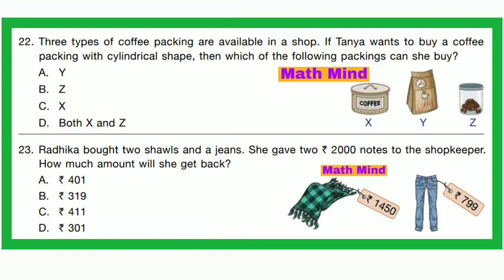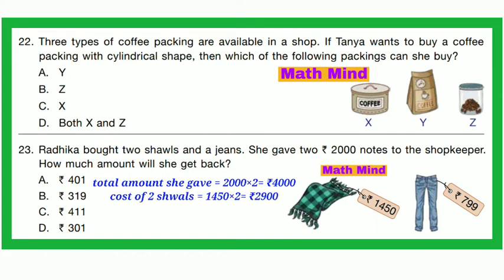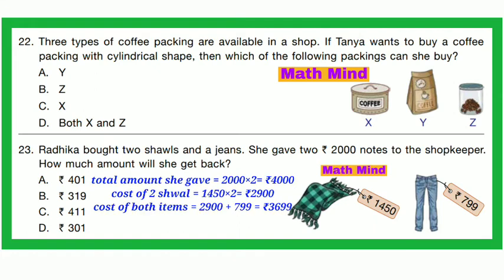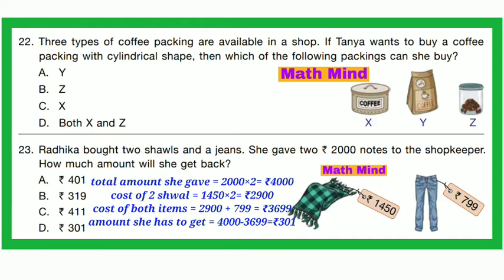Question No. 23: Radhika bought 2 shawls and jeans. She gave two 2000-rupee notes. How much will she get back? Total given = 2000 × 2 = 4000 rupees. Cost of 2 shawls = 1450 × 2 = 2900. Cost of jeans = 799. Total cost = 2900 + 799 = 3699. Change = 4000 − 3699 = 301 rupees. Option D is correct.